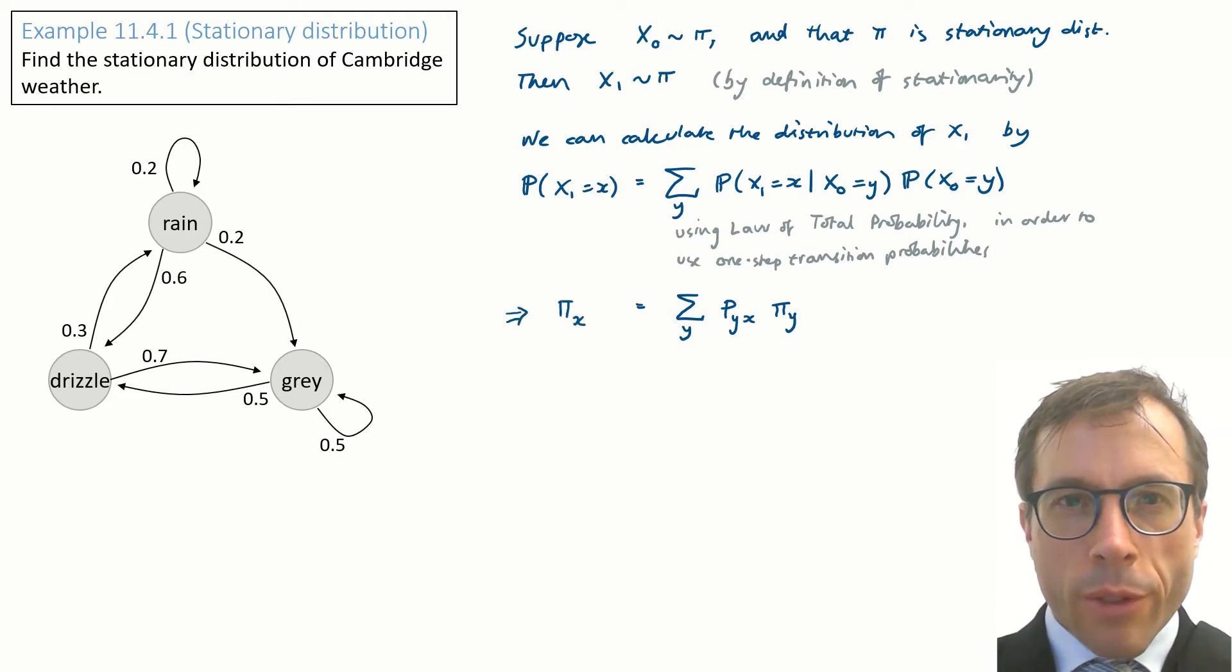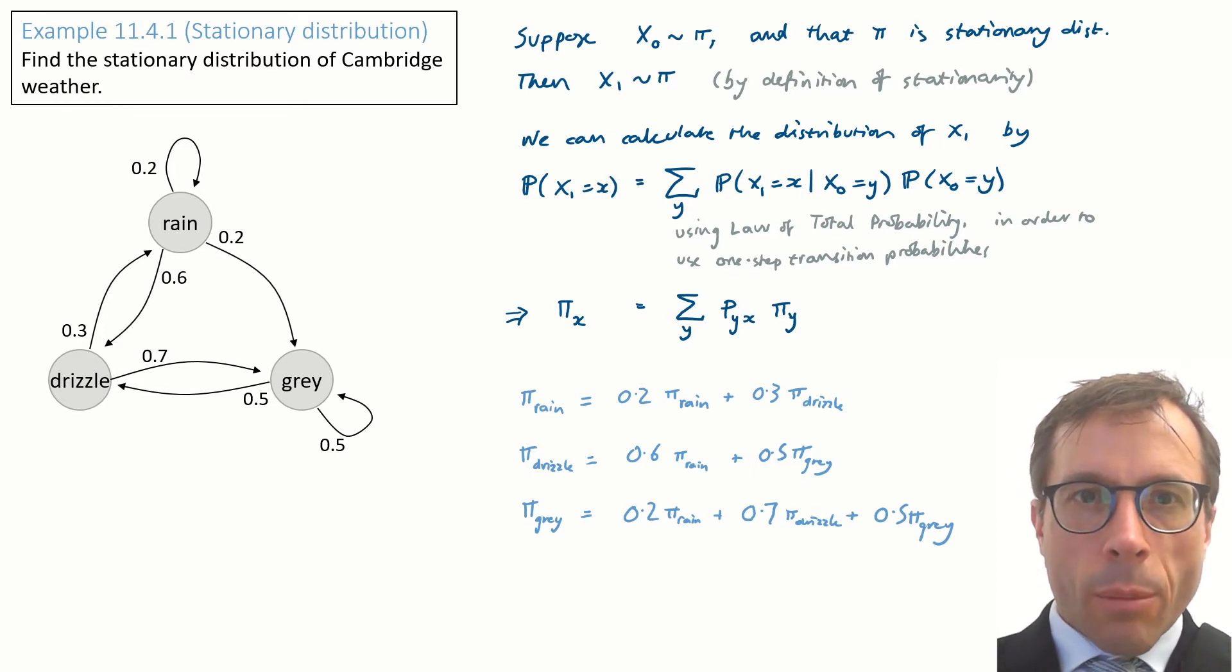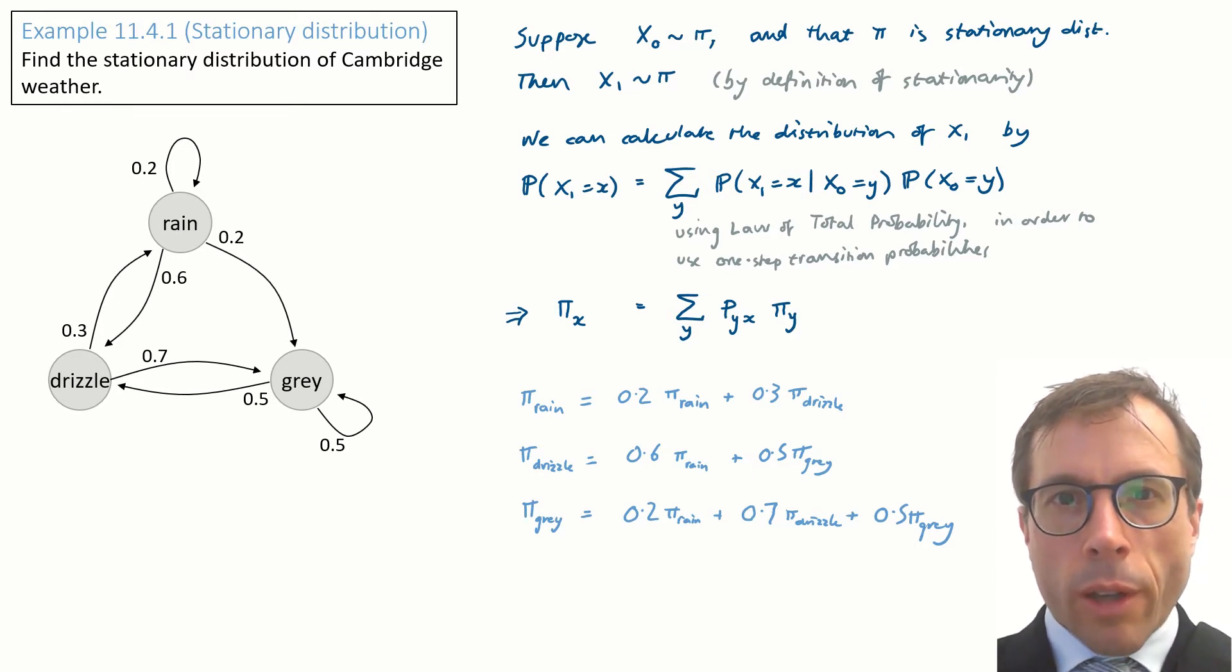So what we've derived is a formula for π_x in terms of the whole π vector. Let's just write out these equations, one equation for every state x. We could write them all like this with algebra, or if we wanted to, we could write it as a matrix equation.